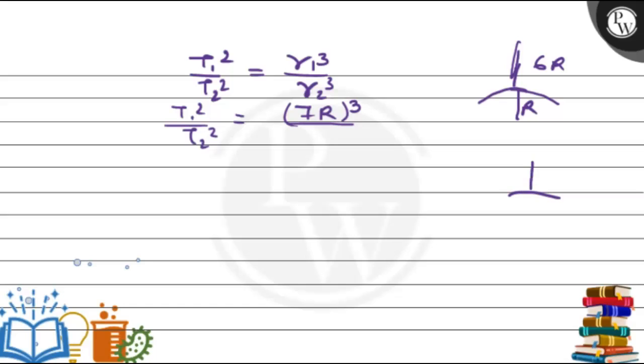For the second satellite it is at the height of 2.5R, and R is from the center, so it will become 3.5R whole cubed. R and R will be cancelled out, so it will be 2 times. So T1 squared is 24.